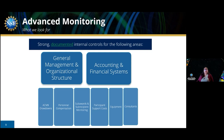Strong internal controls — what do we mean by that? Those are ones that are documented and thoroughly address the compliance area. Your organization should maintain documented internal controls in each of the areas listed here on the slide, with particular attention paid to your organization's general management, organizational structure, and accounting and financial systems. NSF really considers these to be foundational areas in terms of good grants management. Building upon those foundations, NSF is additionally interested in ensuring an organization has good practices around its ACMS drawdowns, personnel compensation, subawards and subrecipient monitoring, participant support costs, equipment, and consultants.